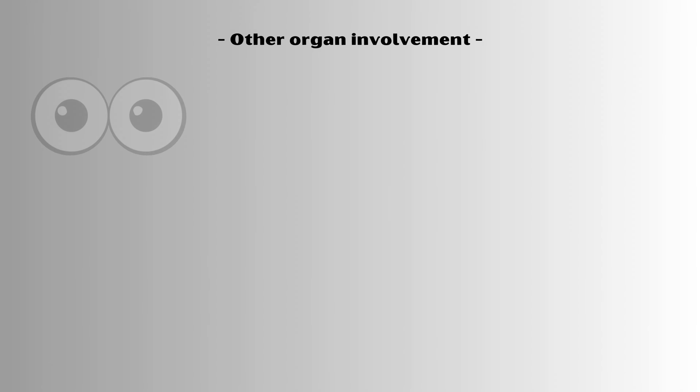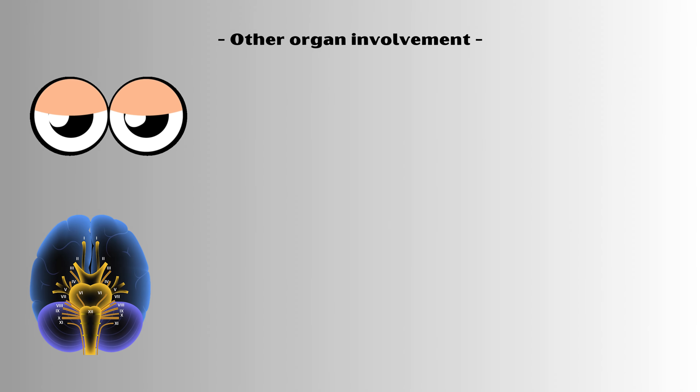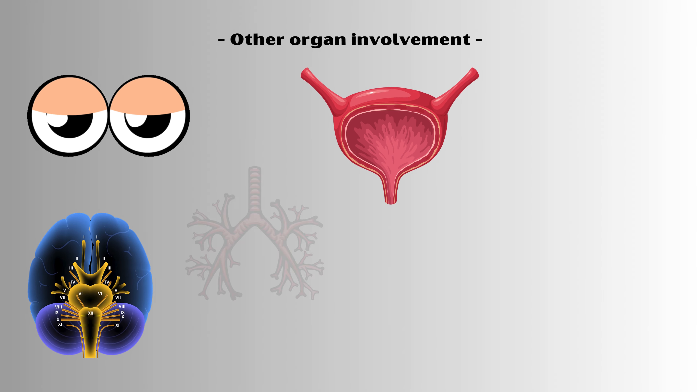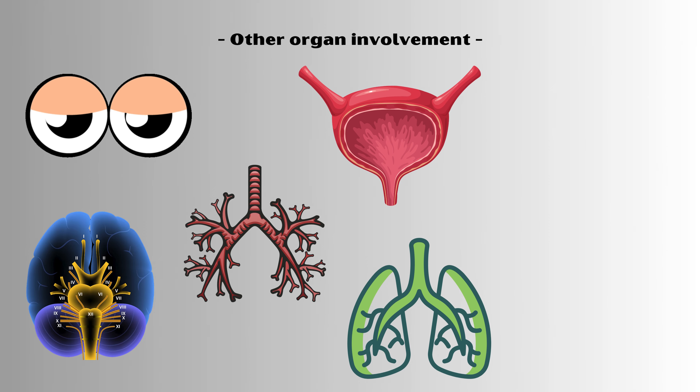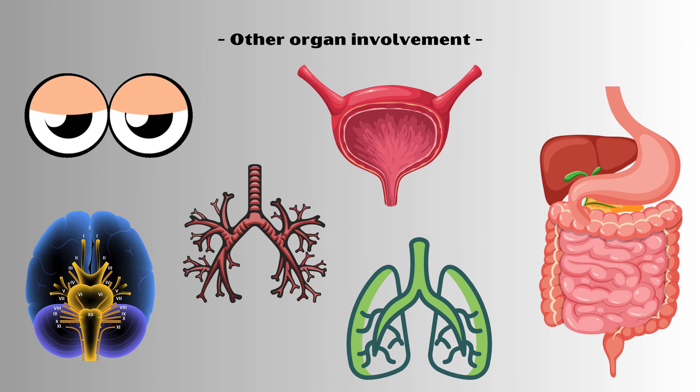Herpes zoster can involve various other structures as well, including the eyes, cranial nerves, and visceral organs such as the bladder, bronchi, pleural space, and the gastrointestinal tract.